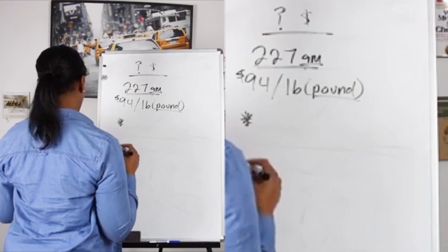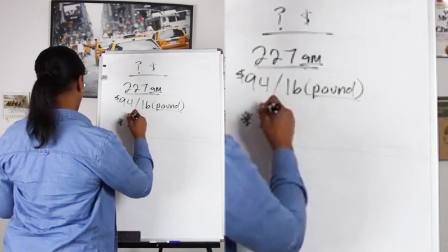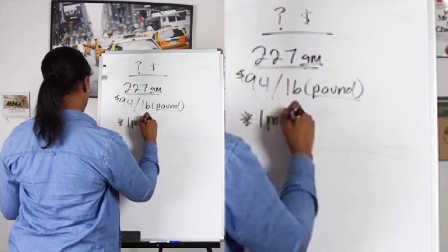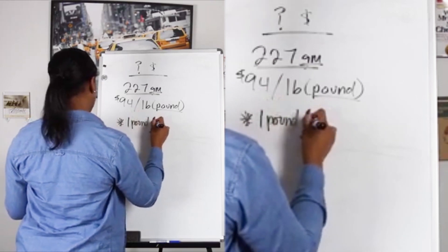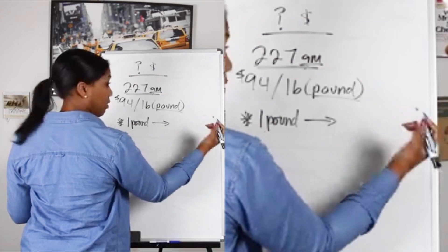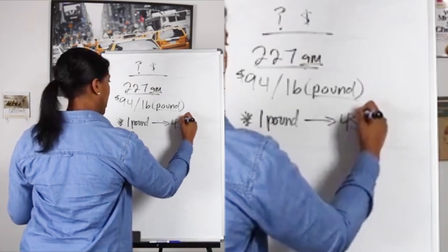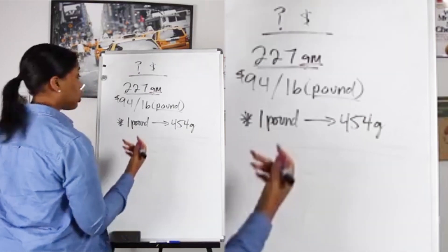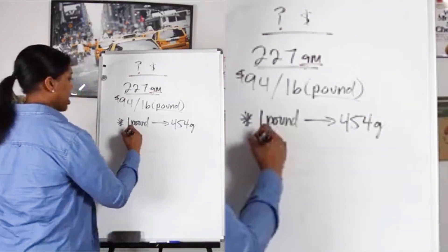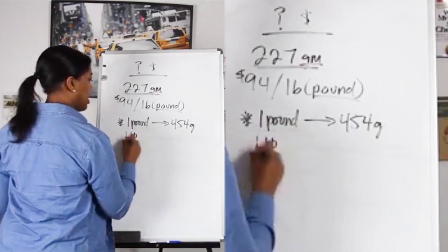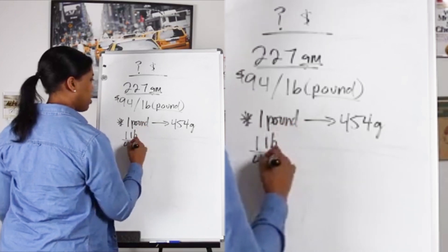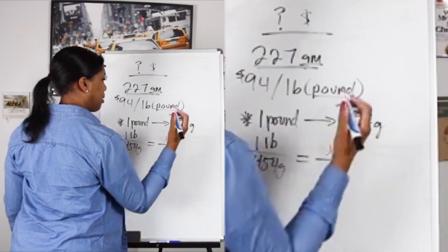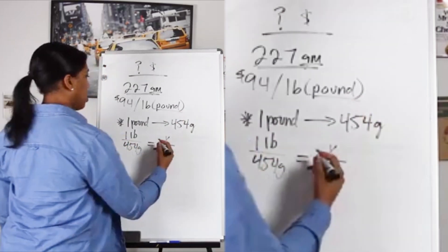Rule of thumb that we know: one pound is equivalent to 454 grams. So let's set up the ratio like normal. If one pound is equivalent to 454 grams, then how many pounds is